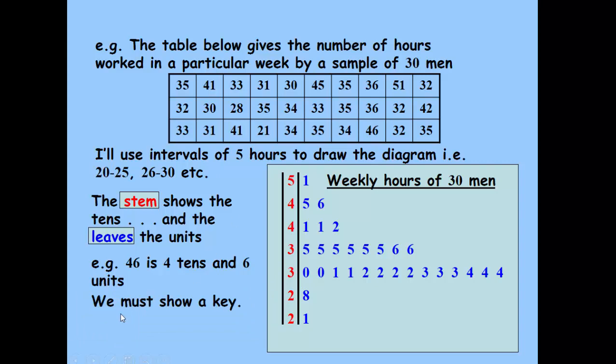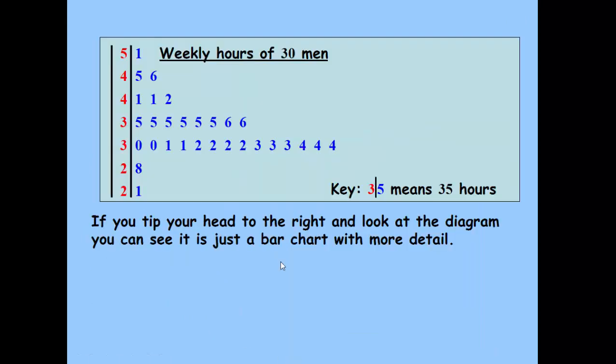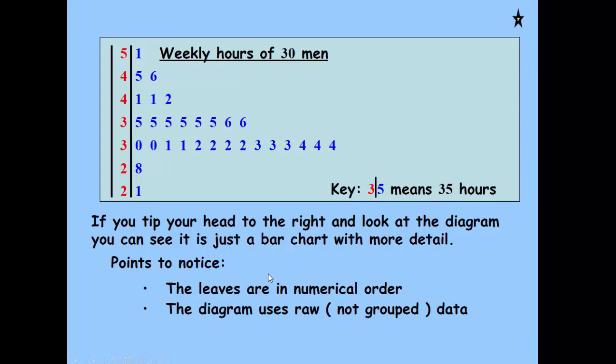Usually with a stem and leaf diagram, we give a key that explains the stem and the leaf, a bit like a bar chart. We do tend to do the leaves in numerical order, counting upwards. The diagram is using raw data. We've not got it grouped to start off with, so there's no frequencies.